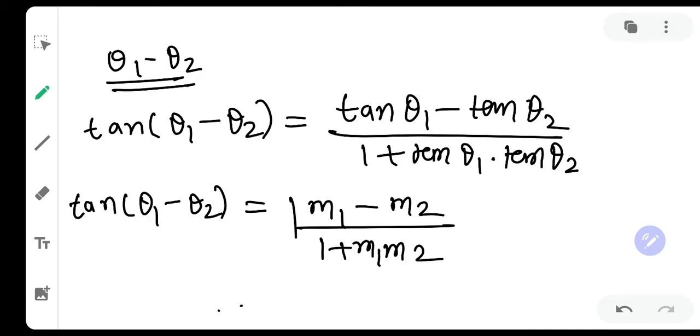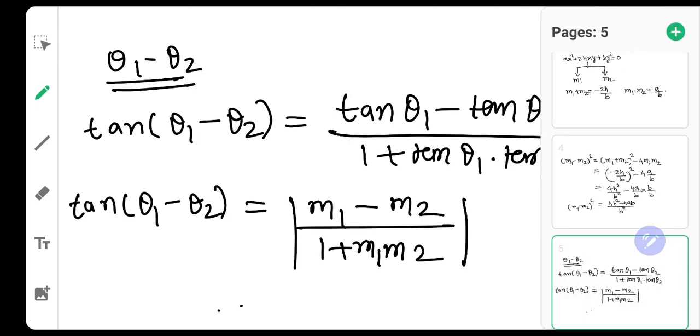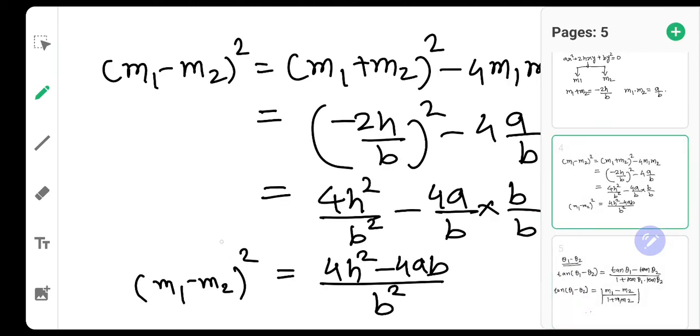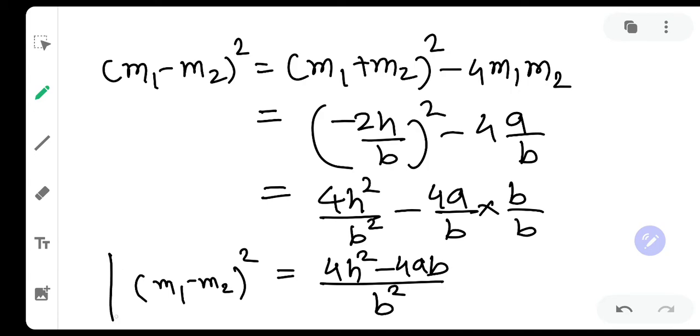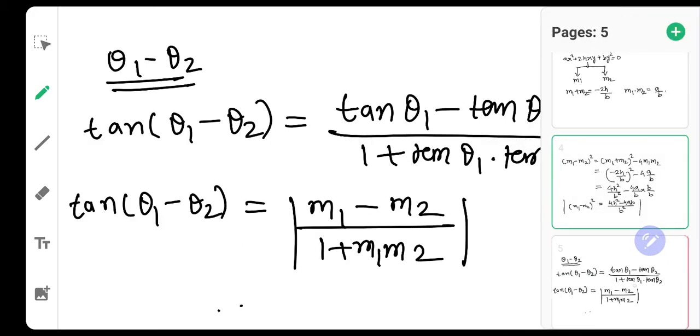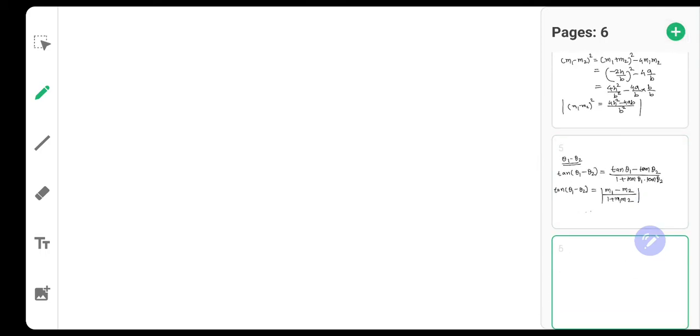We need the acute angle between the two lines and we apply the mod. If we go back, we have already calculated (M1 - M2)² which is nothing but (4H² - 4AB)/B². So what we will do is add one more page and write down (M1 - M2)².